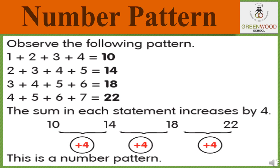For the next number 14, 2 plus 3 plus 4 plus 5 is added. For the next number 18, 3 plus 4 plus 5 plus 6 is added. And for the number 22, 4 plus 5 plus 6 plus 7 is added. That means the sum in each statement increases by 4. This is known as a number pattern.